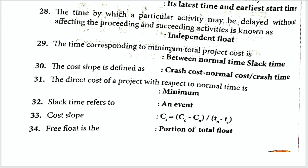The time corresponding to minimum total project cost is between normal time and crash time. The cost slope formula is: (Crash Cost − Normal Cost) / (Normal Time − Crash Time), i.e., (CC − CN) / (TN − TC), where CC is crash cost, CN is normal cost, TN is normal time, and TC is crash time.